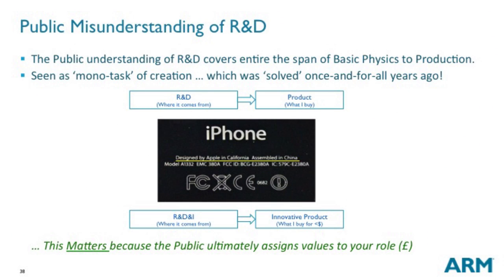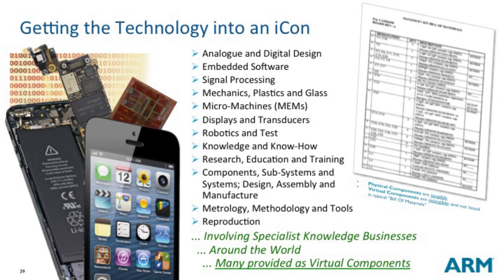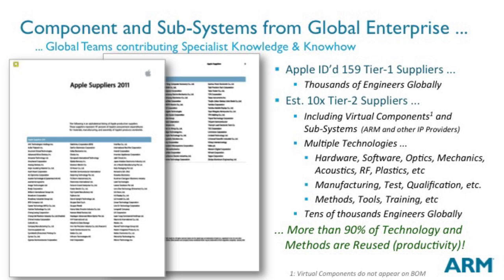I talked about the public misunderstanding of R&D — what I call the monotask. People believe there is a process called R&D and a thing called product which is what they buy. If they're talking about RD&I — where the innovation word comes in — an innovative product is differentiated from an ordinary product because it costs less. That's the real public definition of innovation. It matters that we help to disillusion people about this, because if they understand it then they will recognise us more, and if they recognise us more, not only do we get more money but we get more support for the things we want to do. Apple back in 2011 identified 159 tier-1 suppliers into their products — and ARM isn't even mentioned. ARM is in the tier-2 supplier group, which is 10 times bigger. These are products not of a single company but of millions of engineers and tens of thousands of companies operating all around the world.